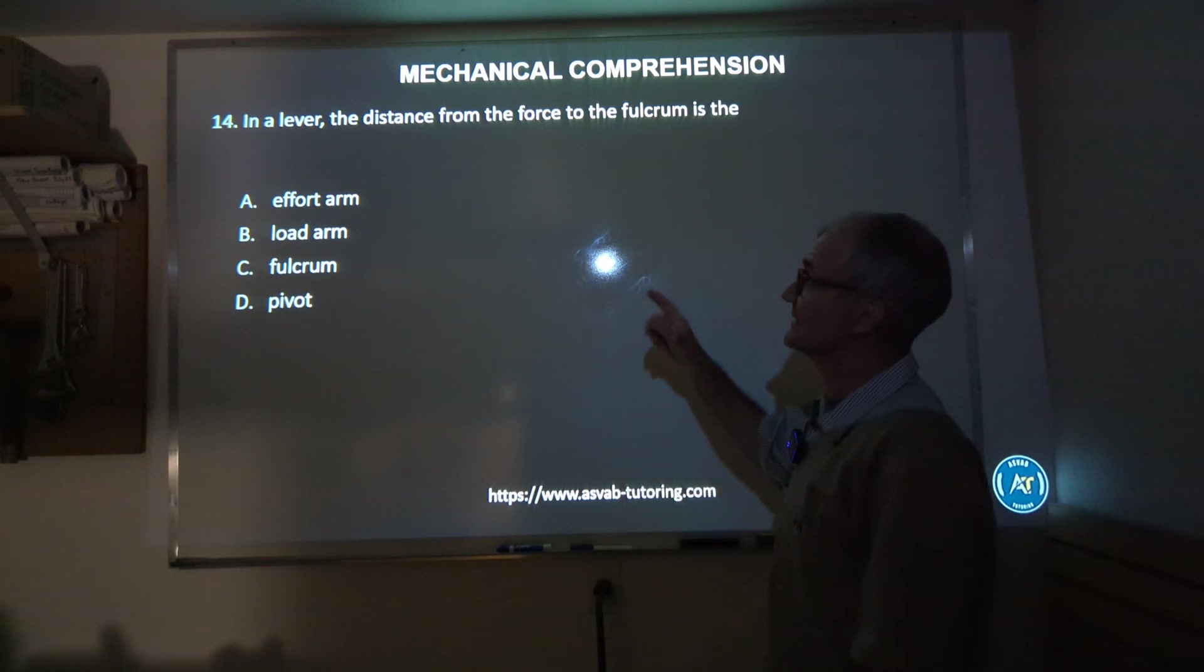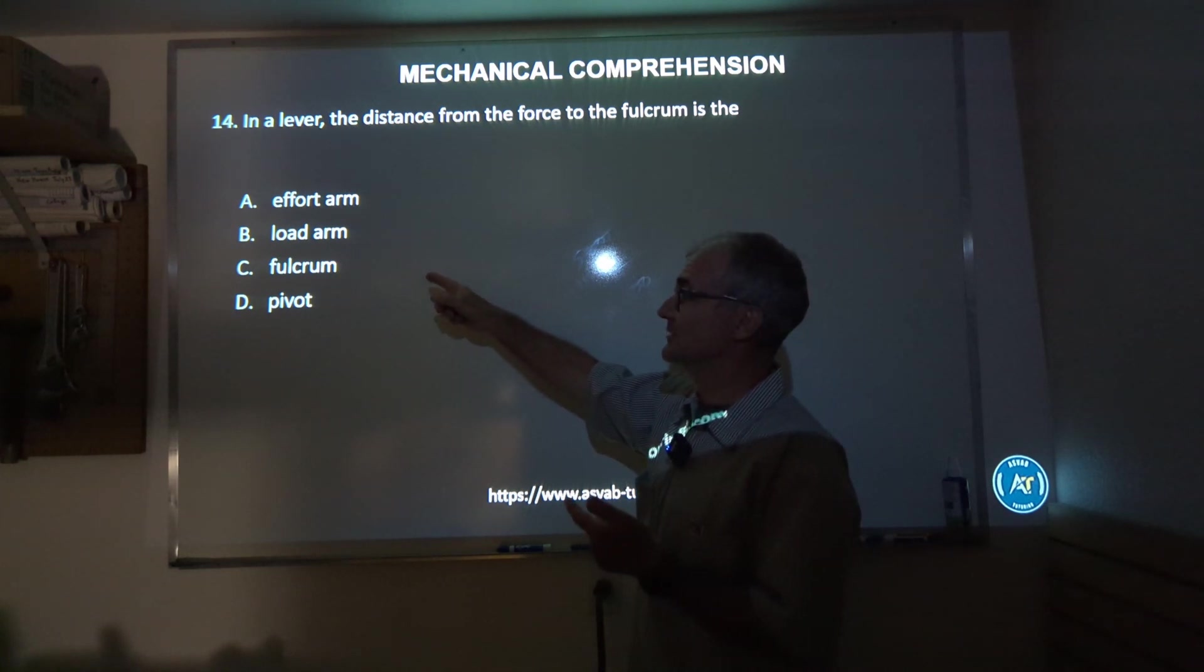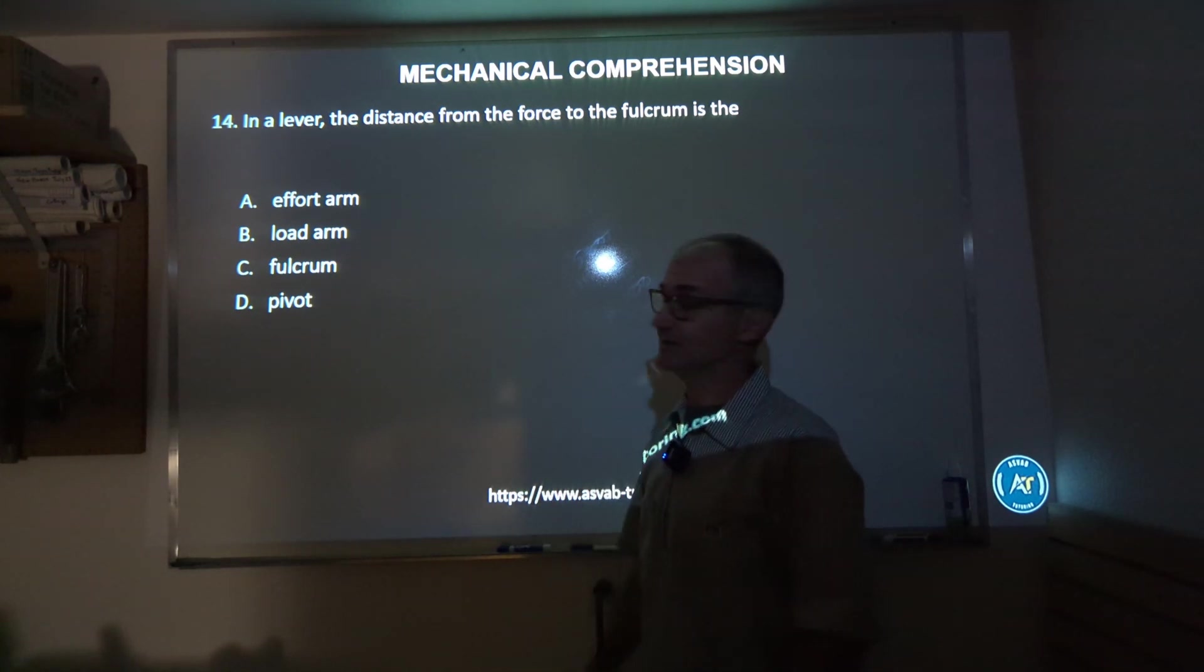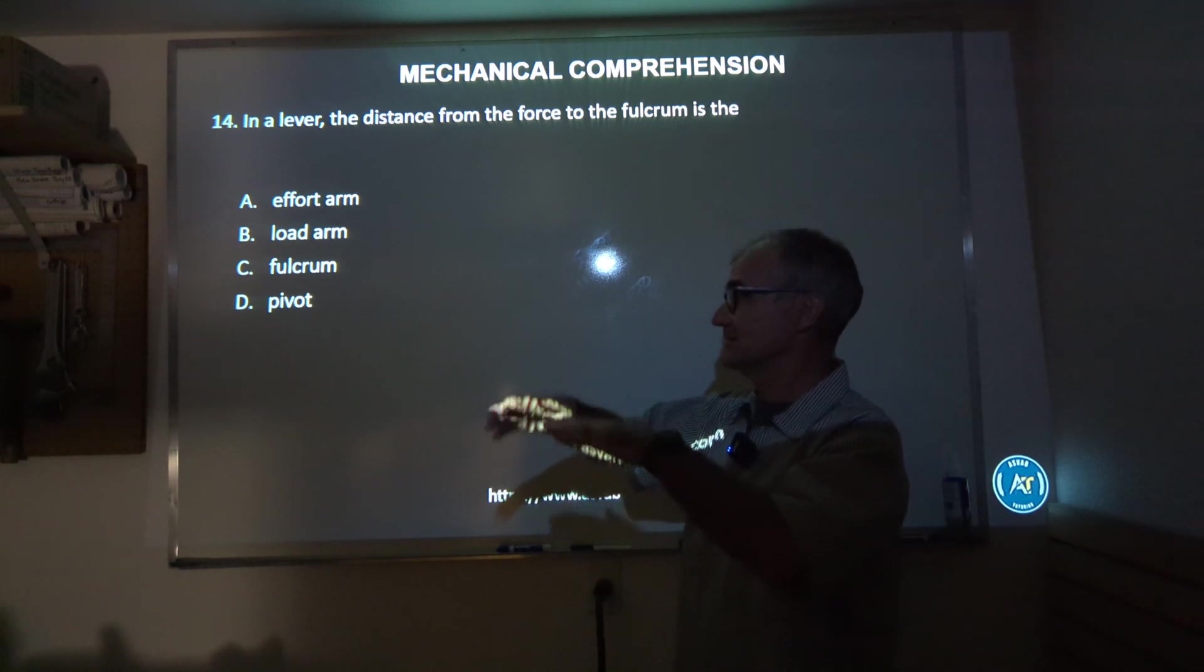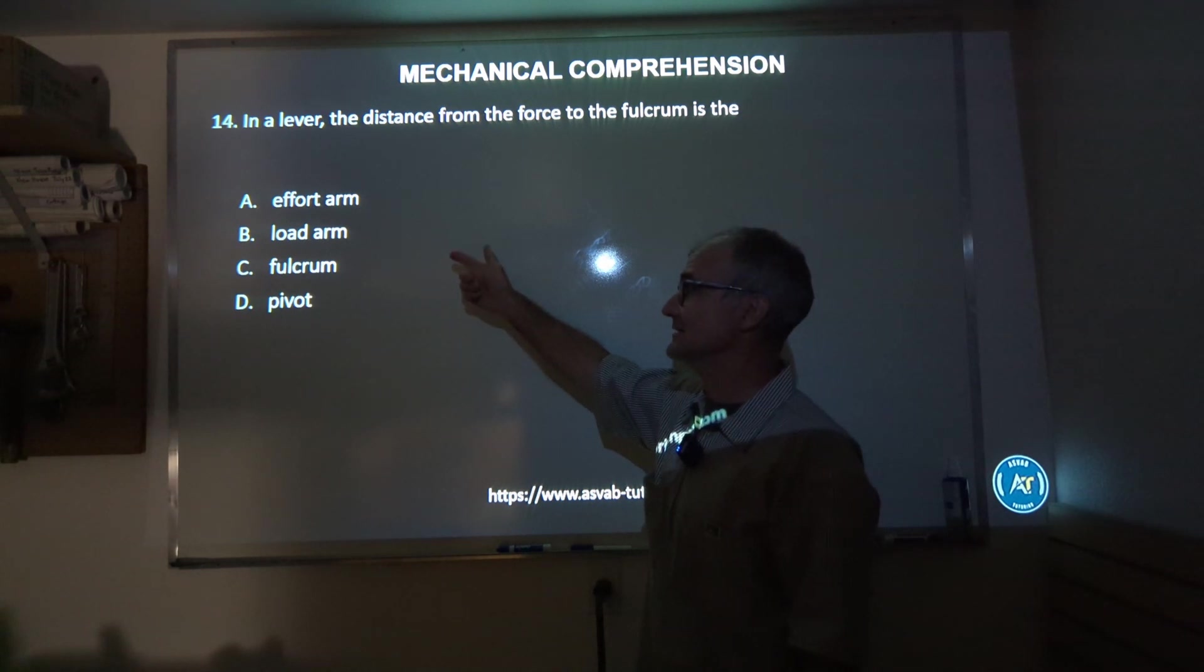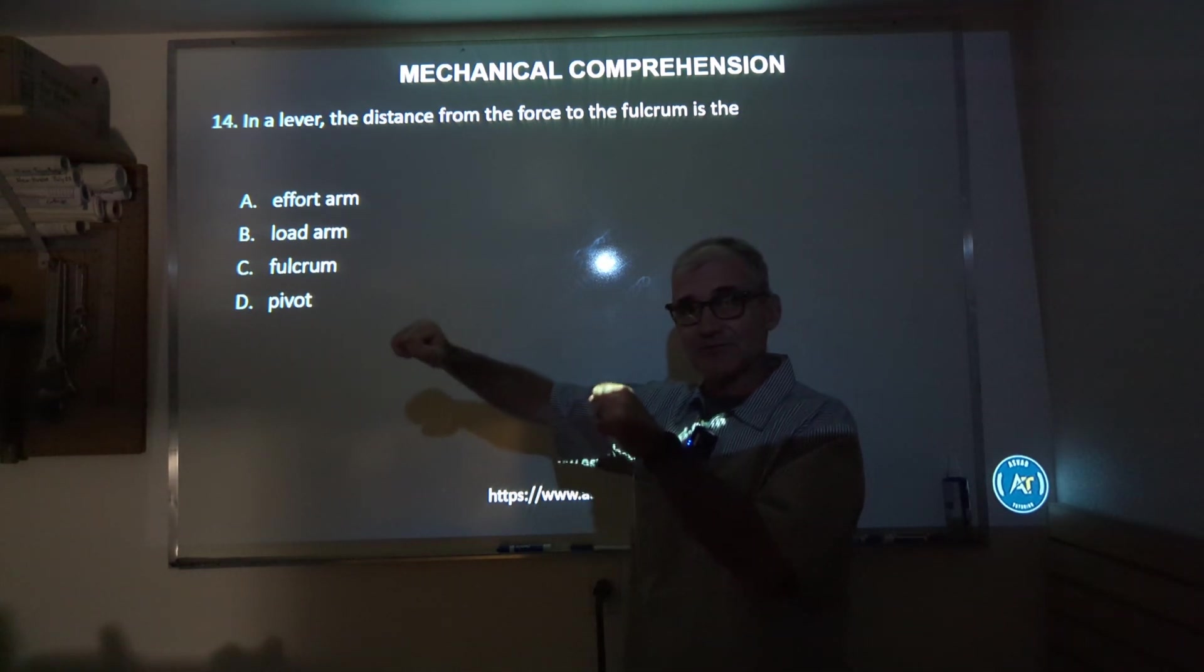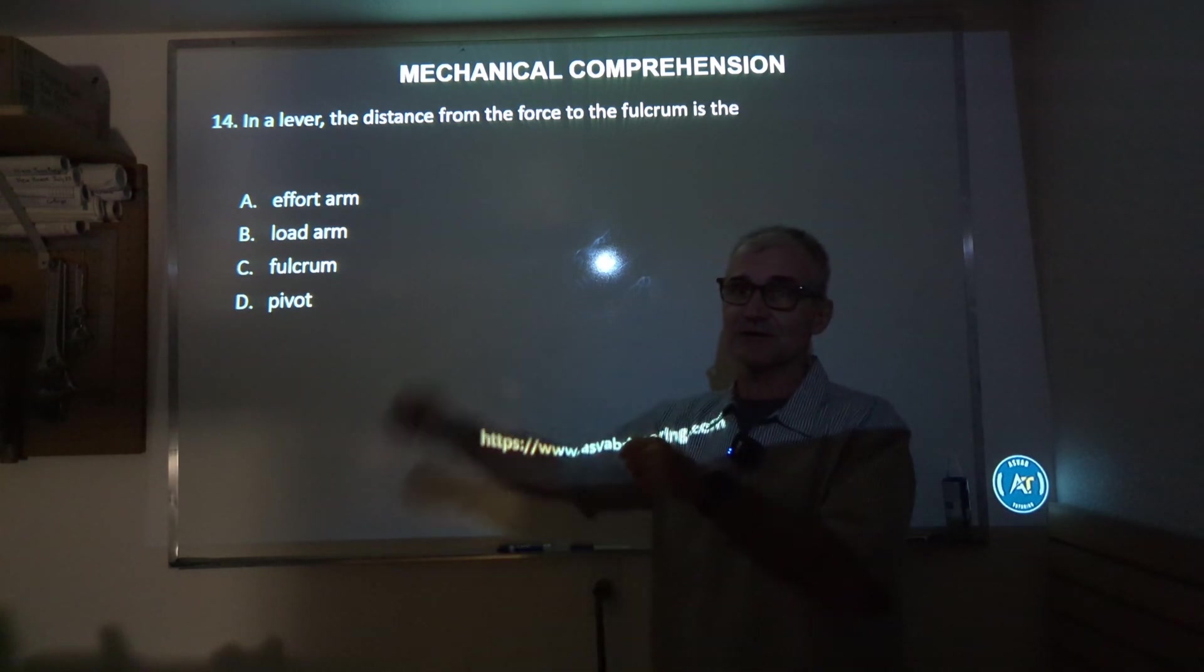Number 14: in a lever, the distance from the force to the fulcrum is the A, effort arm, B, load arm, fulcrum, D, pivot. Well, pivot's the thing that's turning around. Fulcrum is also on a lever that doesn't really make any sense. So I got to pick between A and B. It is actually the effort arm. The effort arm is where you're putting the effort in to rotate something around.